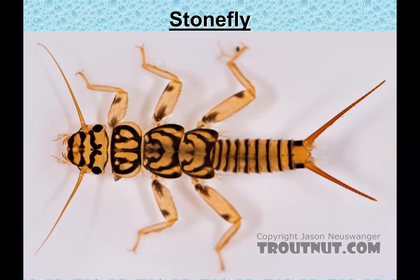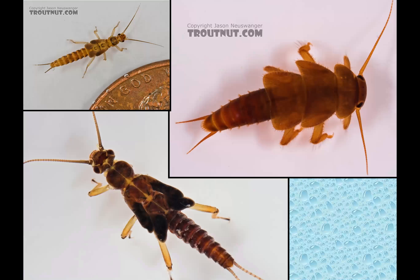Stoneflies are sometimes confused with mayflies, but there are key differences. Stoneflies have two tails — not three — and their gills are underneath their thorax rather than on their abdomen. A common stonefly called a perlid is about an inch long, very pretty, and requires clean, cold, clear running water. Stoneflies come in all sizes, from tiny winter stoneflies to large roach-like perlidae. What they all share: two tails and no abdomen gills, with gills tucked under the thorax.